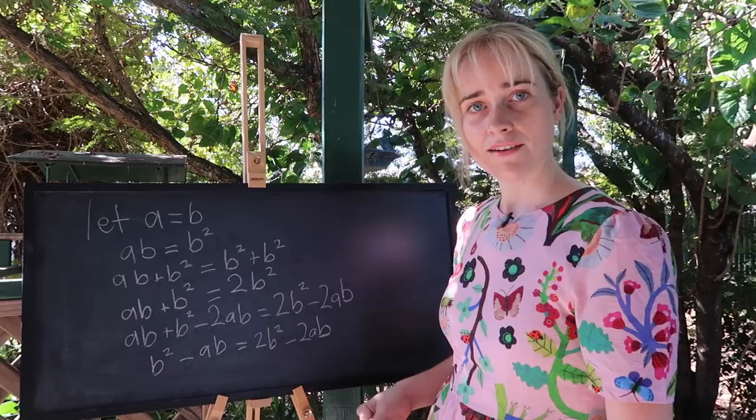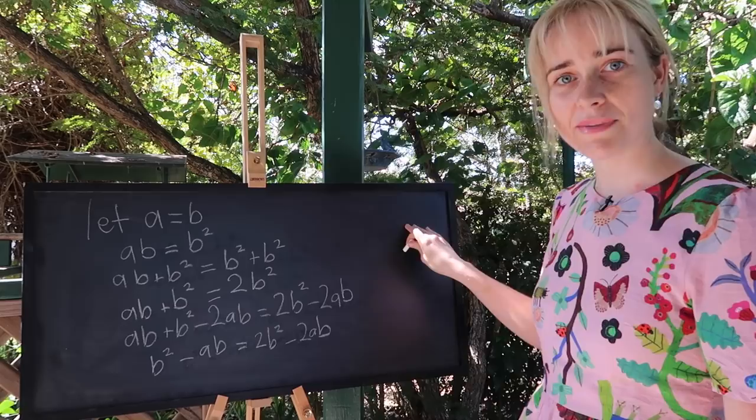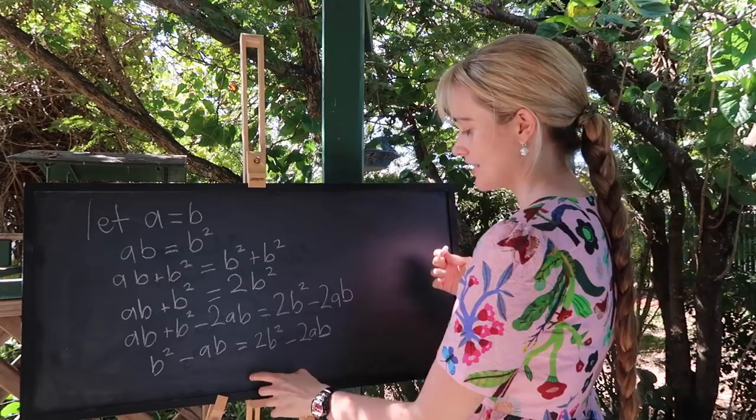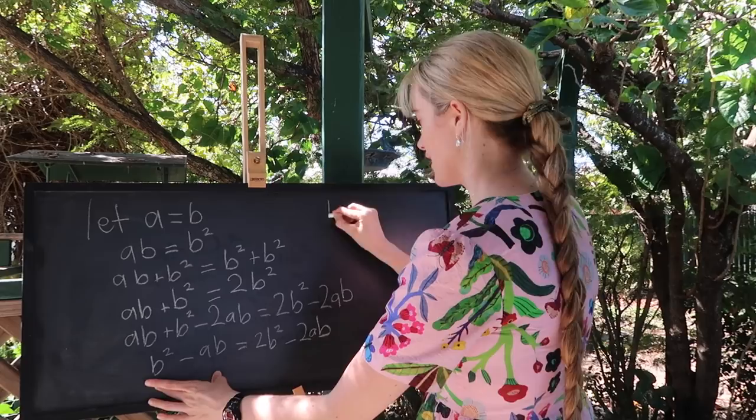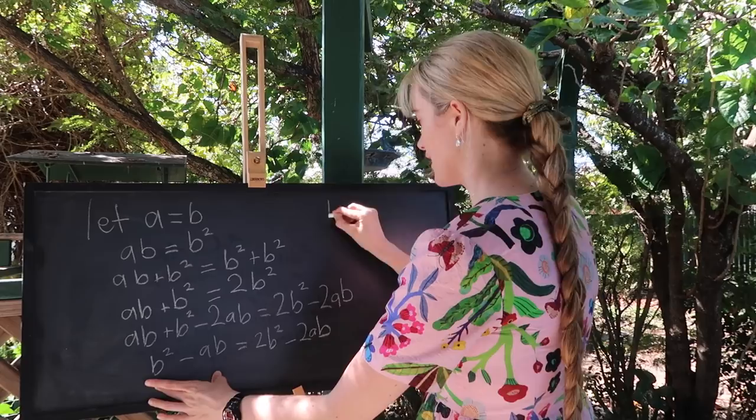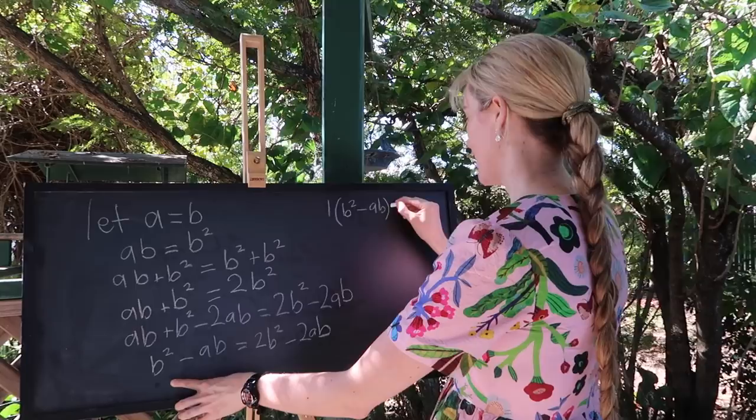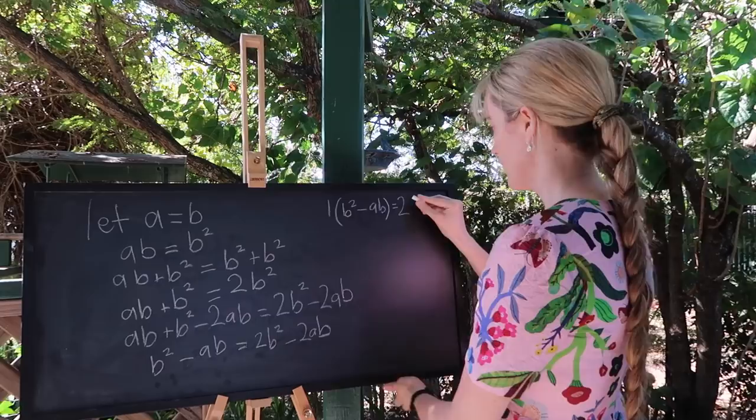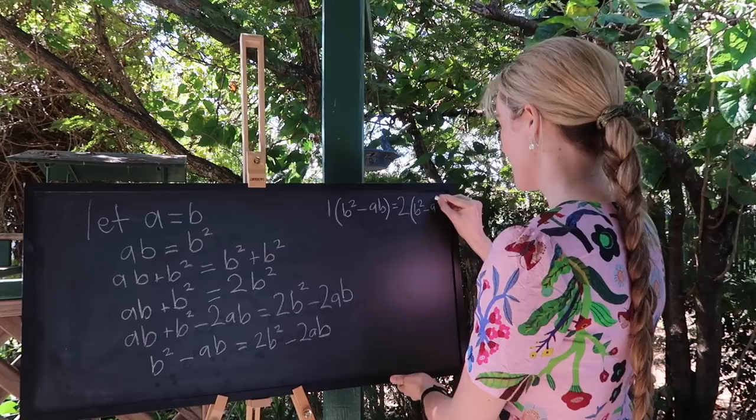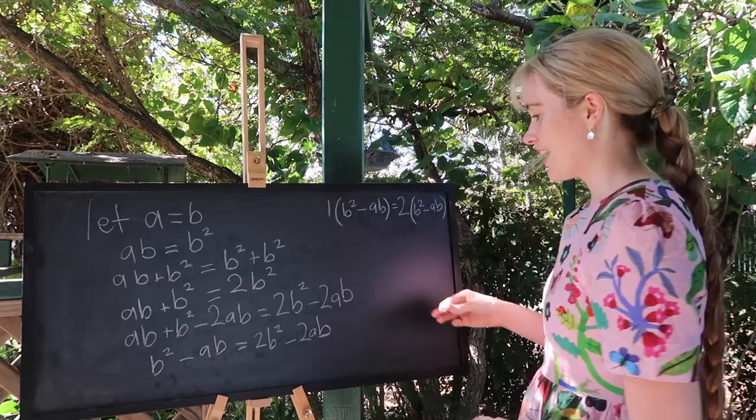Alright what I want to do next is to factorize this line and I'm going to continue up here to do that. So there's one common term to both sides and that is B squared minus AB. On this side we could take a 1 out of the bracket if we really wanted to it's somewhat unnecessary but we have 1 times B squared minus AB and that is equal to well we can take a 2 outside the brackets now 2 times B squared minus AB. Getting a little close to the edge there but I think we're all right.